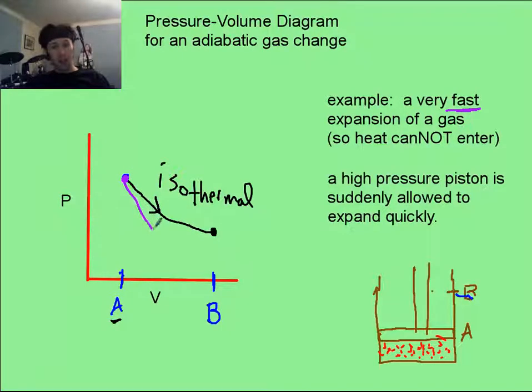it will cool off. And so the final state over here will be at the same volume, but because its temperature has dropped, it can't be at the same pressure. So this is what we're going to call our adiabatic curve.